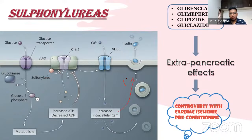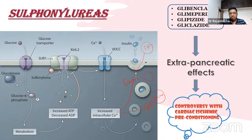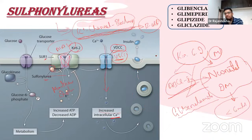Stored insulin granules are released as a first phase of insulin release. A second phase of new insulin synthesis and secretion follows, taking approximately 10 minutes. Sulfonylureas increase both first and second phase insulin secretion.